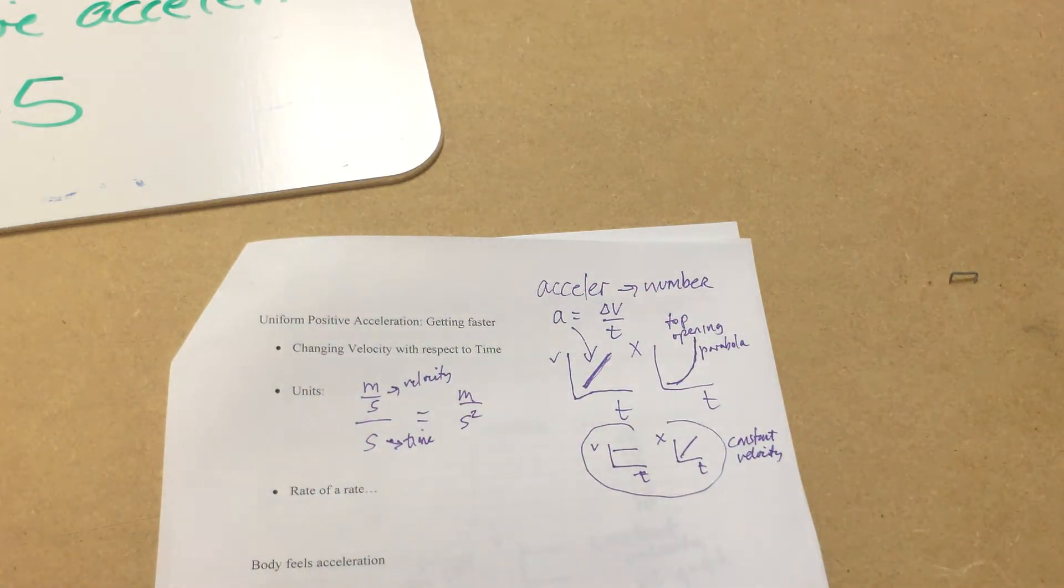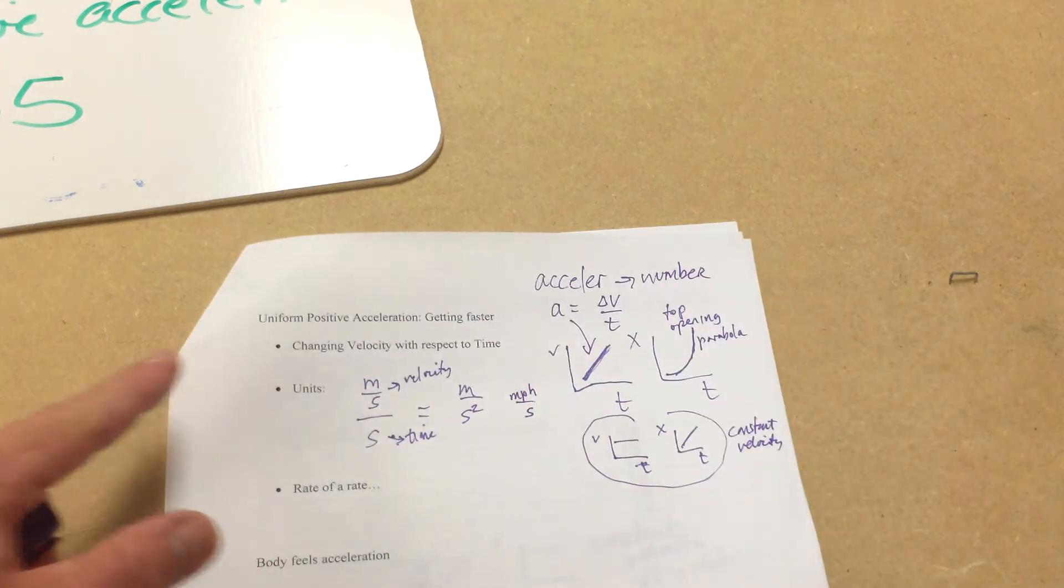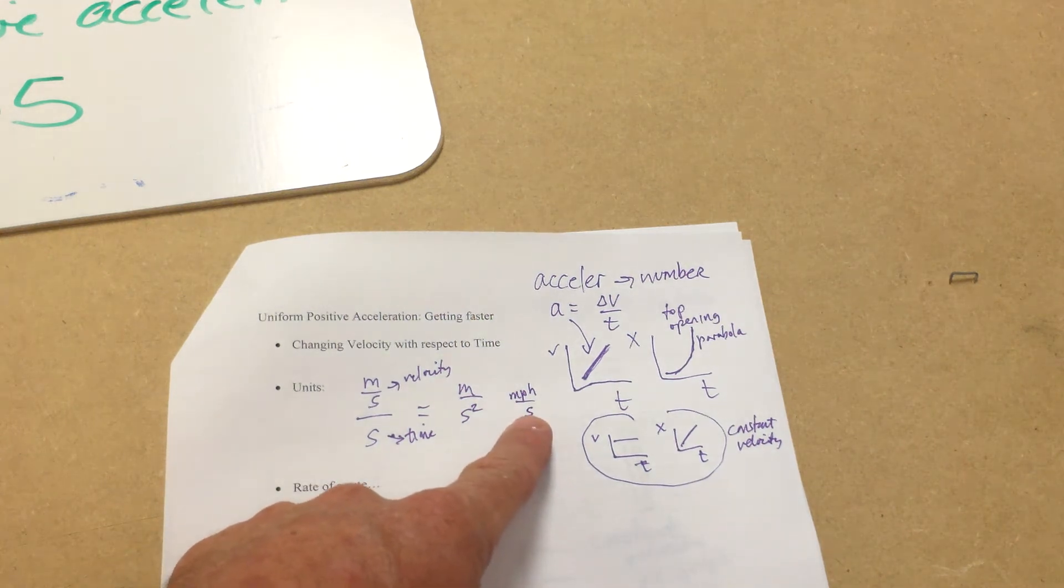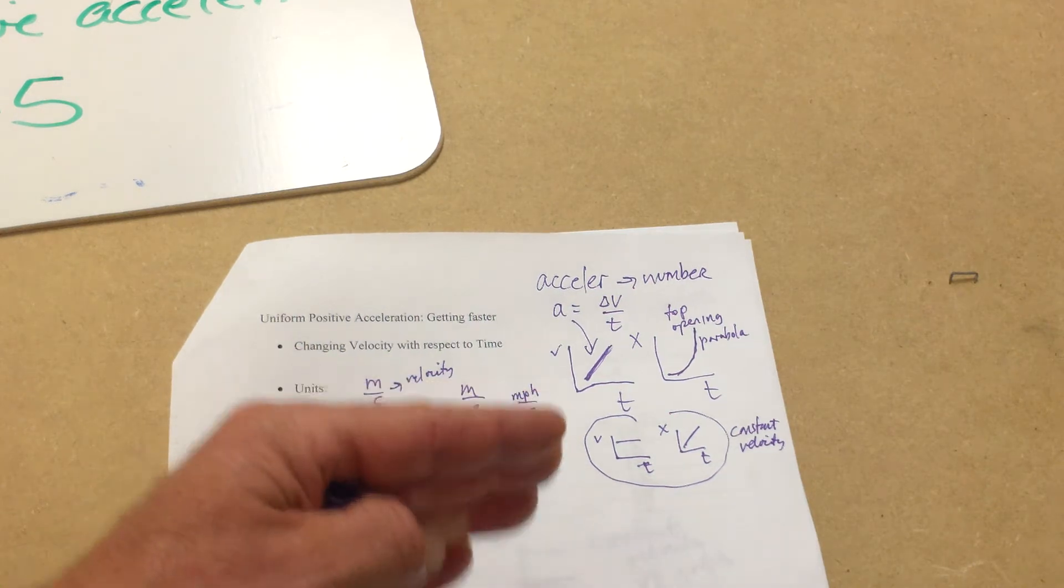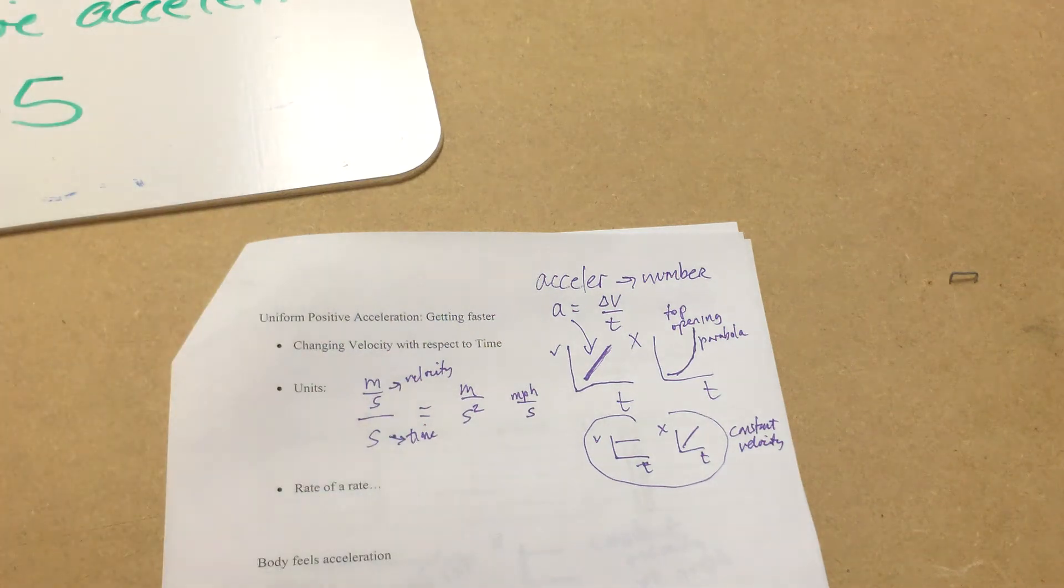Now when we're dealing with cars, we might talk about a mile per hour over seconds. So maybe you're saying that a car can change its velocity by 10 miles per hour every second. So the car would be driving maybe at 10 miles per hour, at 20, at 30, at 40, and it's changing every second.